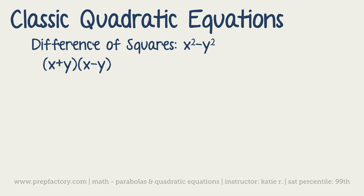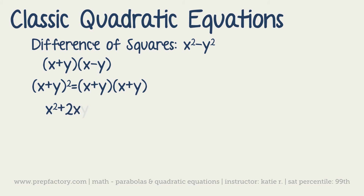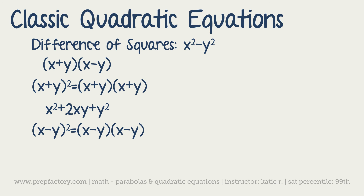Another classic is (x + y)² — written out as (x + y)(x + y), which foils to x² + 2xy + y². Similarly, (x - y)² written as (x - y)(x - y) gives x² - 2xy + y². The only difference between these two is the sign of the 2xy term: positive in the first, negative in the second.